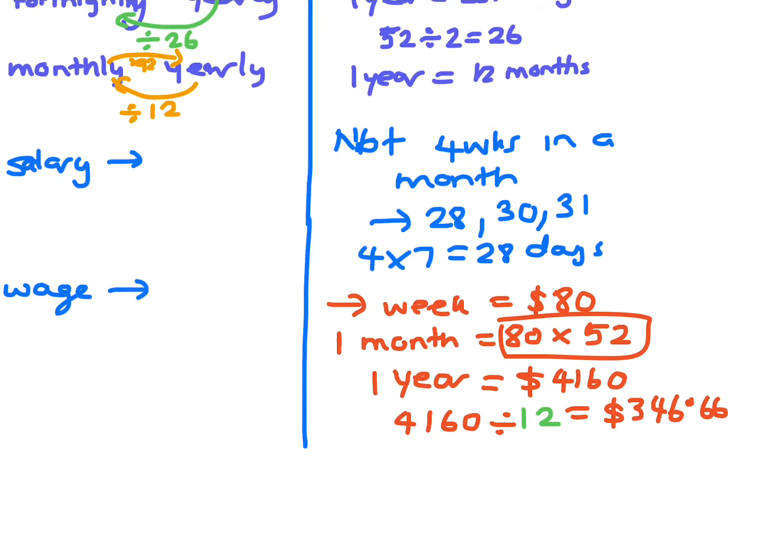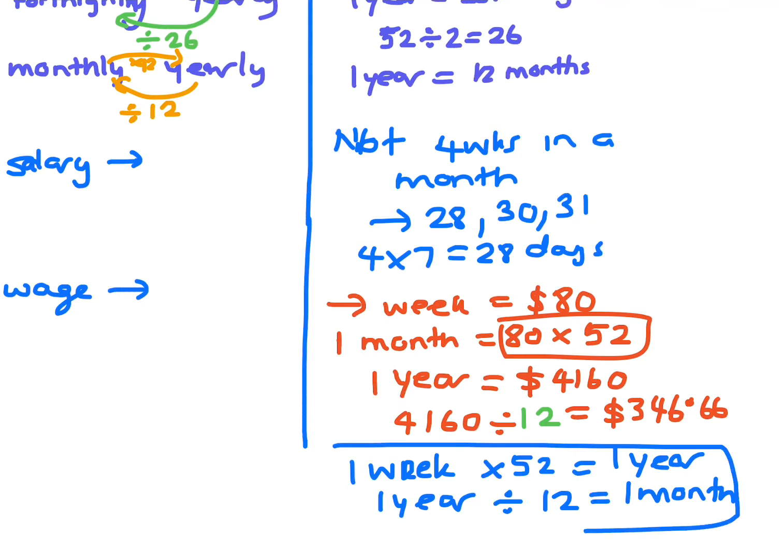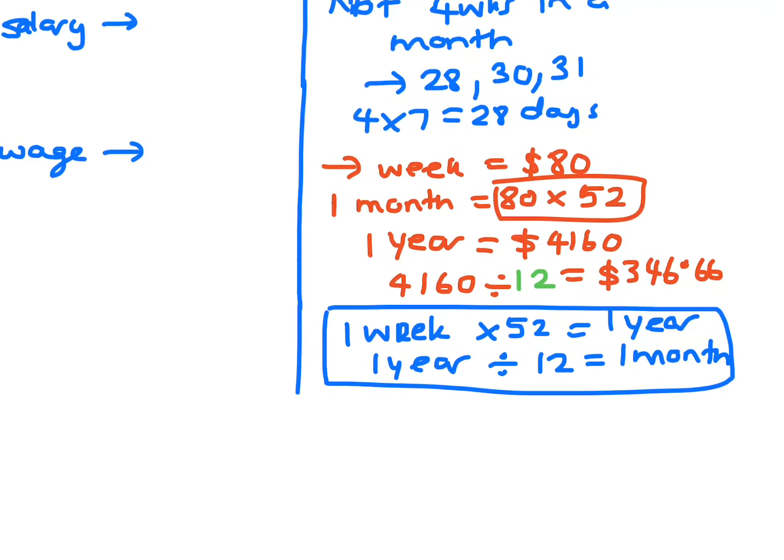So what you're actually doing is, if you've got one week and you want to get one month, you times by 52 and that would give you for one year. And then divide by 12 and that would give you for one month. Now, you can also do this: if you've got one month, you times by 12 to get for one year. And then if you've got one year, you simply divide it by 52 to get for one week.